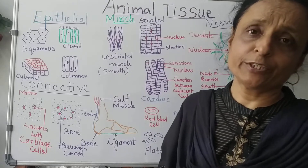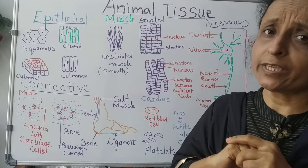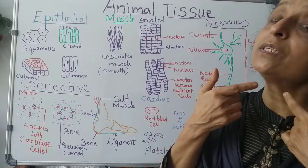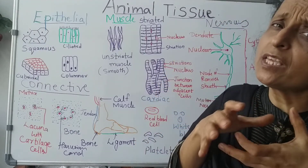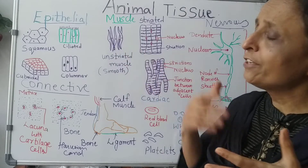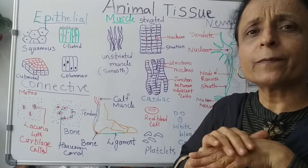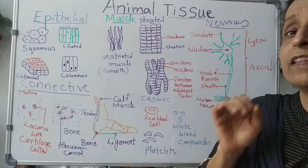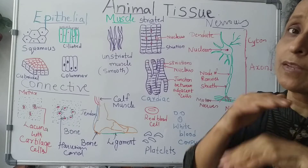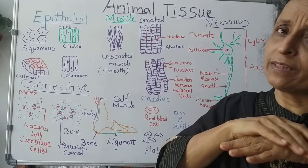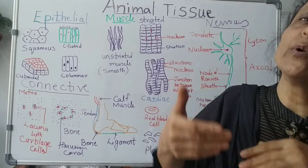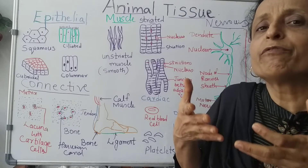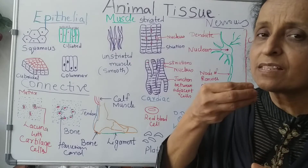Epithelial tissue is for protection. You can see our skin is epithelial tissue which protects our body. This epithelial tissue is not only on the upper surface but also covers the internal lining and covers organs for protection. Squamous epithelial cells are present on the skin — they are hexagonal, flattened, and very thin in structure. Whenever you wash your body, those dead cells come out and new cells go on forming.